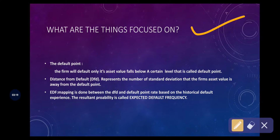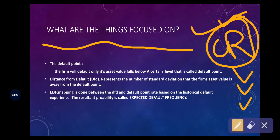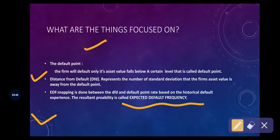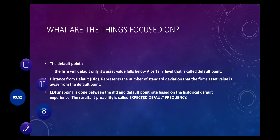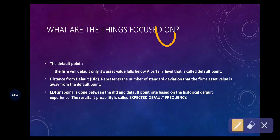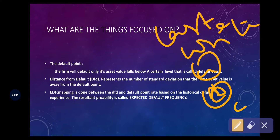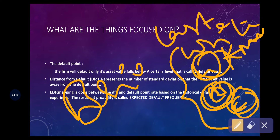Now let's look at what the KMV model focuses on and what basis it uses to measure credit risk. There are three things we need to know: one is the Default Point, another is DFT — that is Distance from Default — and EDF, that is Expected Default Frequency. There are no calculation problems on this model in your syllabus; only theory will be asked, such as writing a brief note on the KMV model.